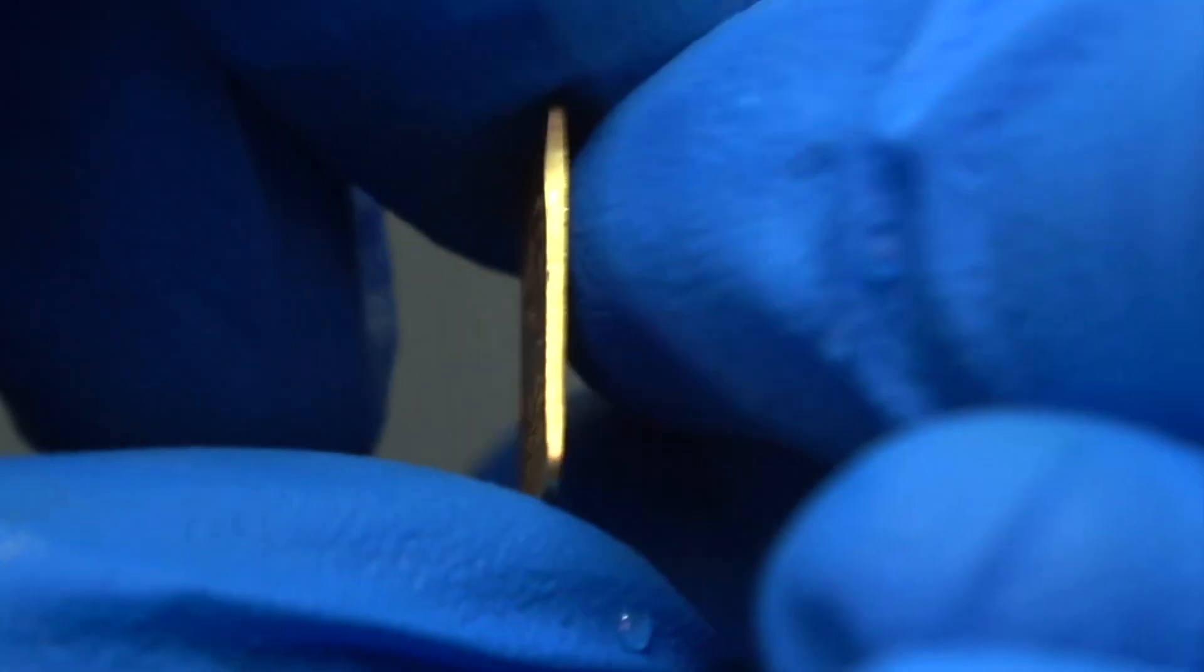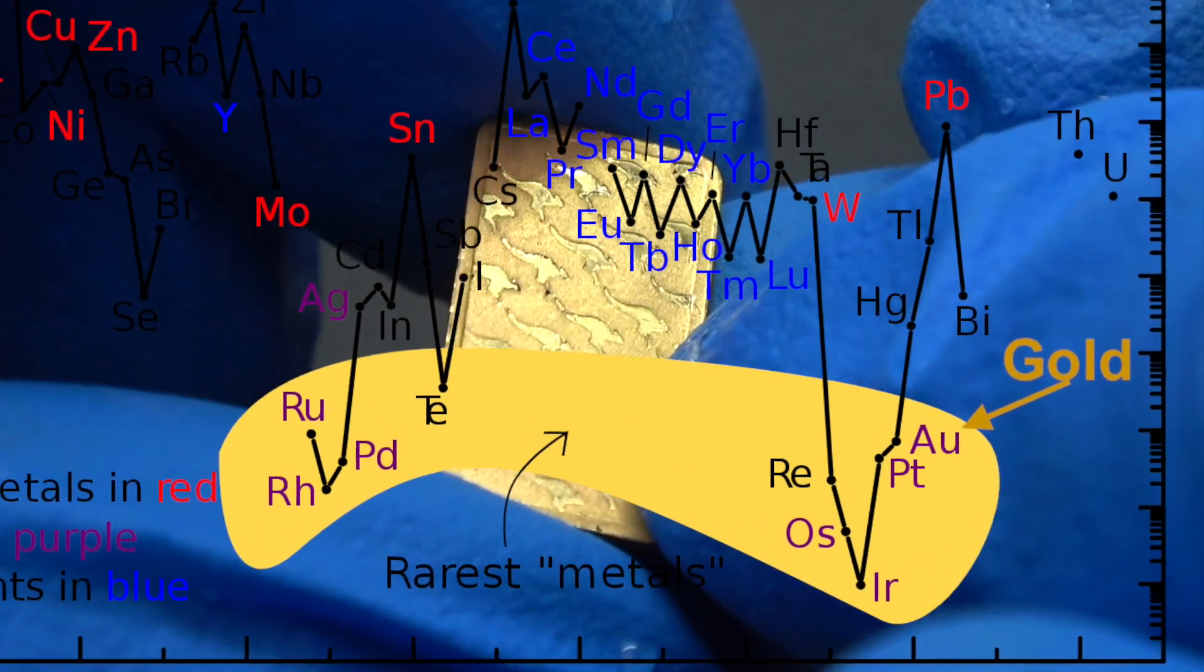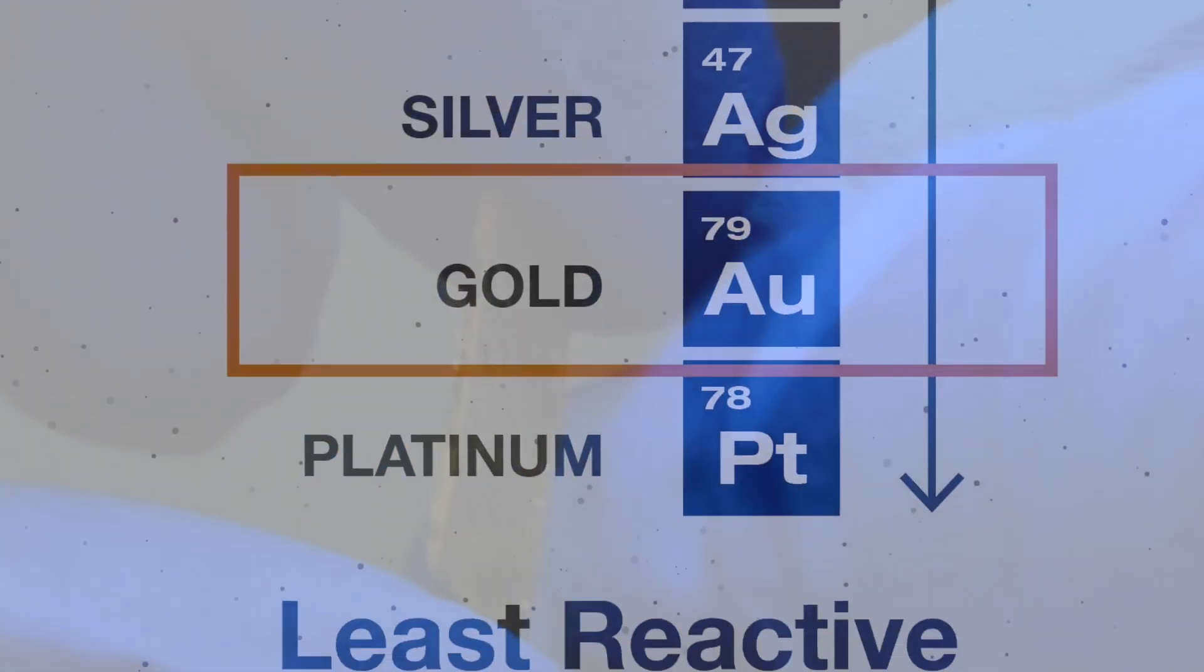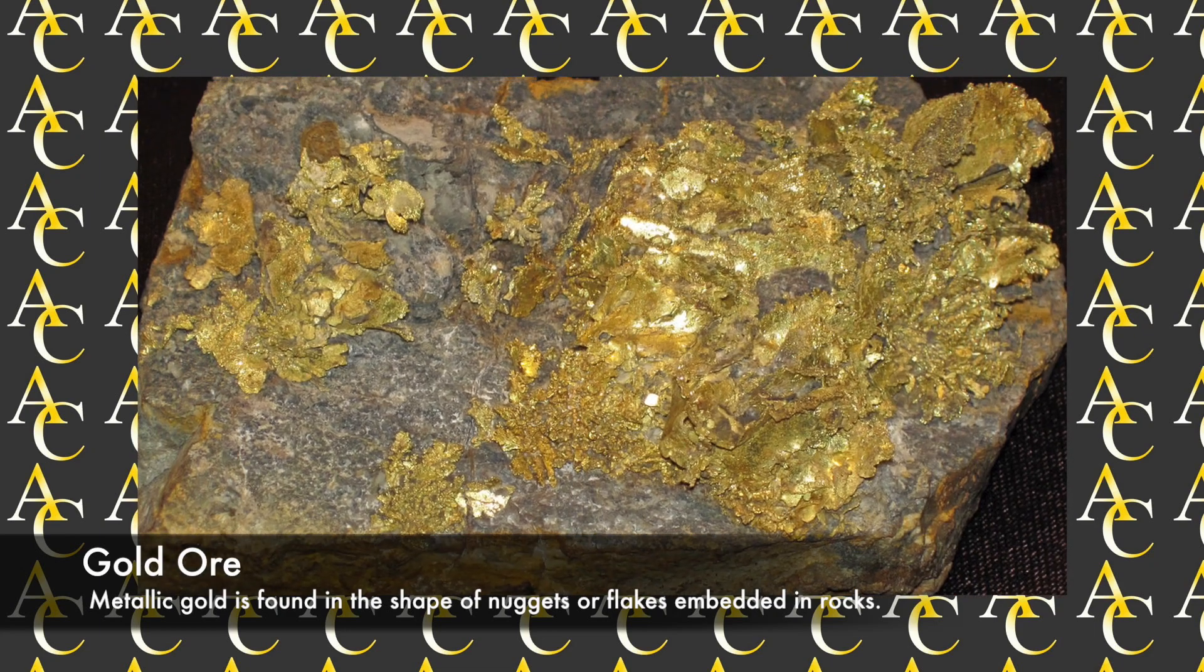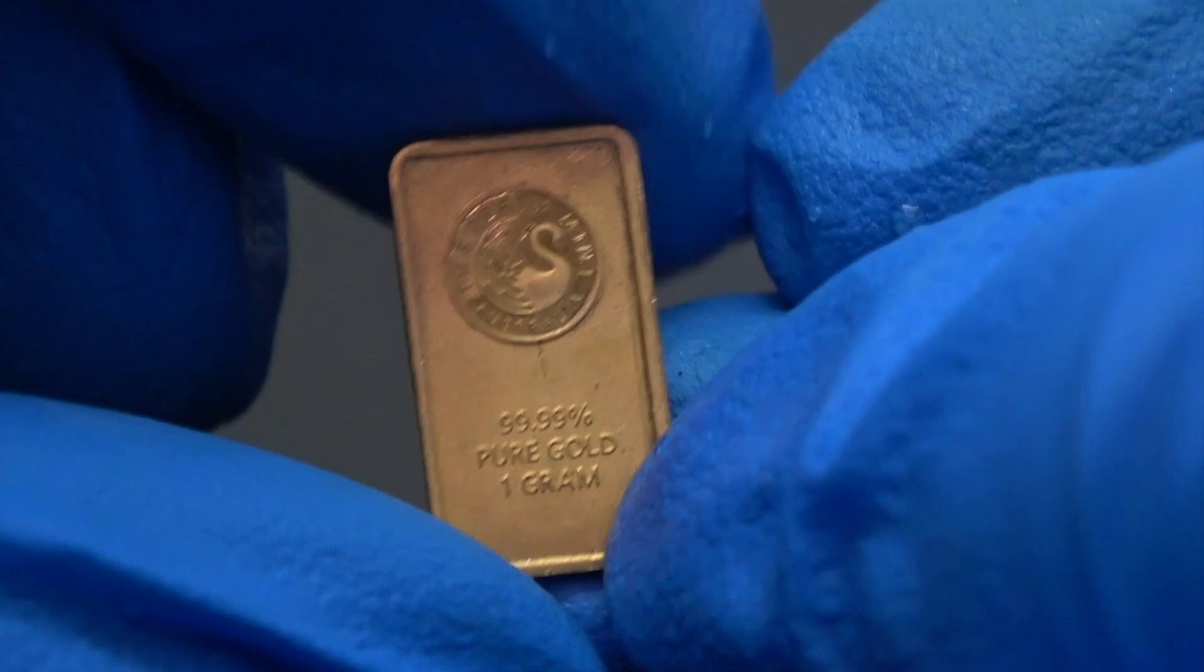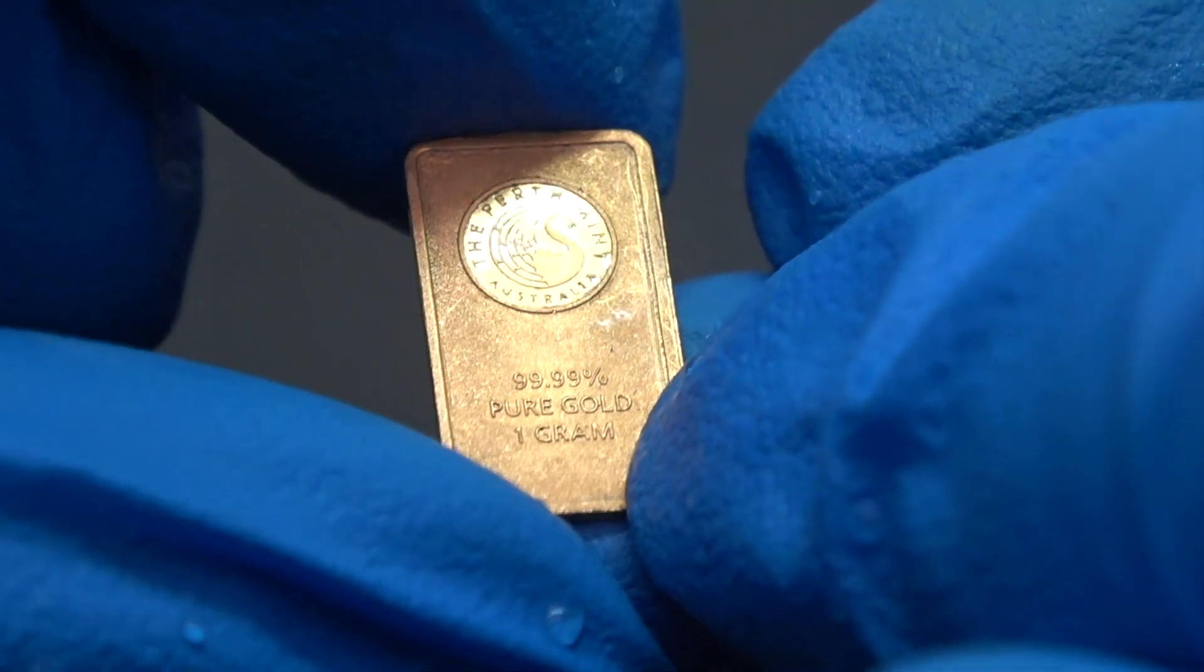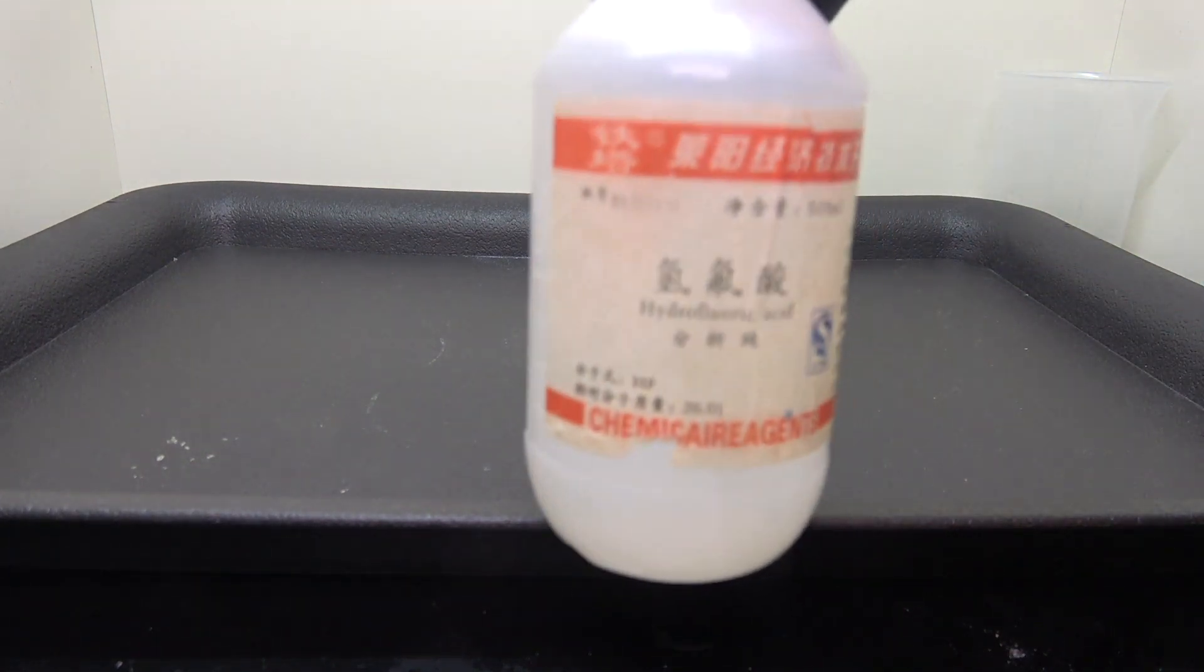Gold has been considered a precious metal since the dawn of human civilization, not only because of its rareness but also its immunity to almost all chemical attacks. It's one of the very few metals that remained in its elemental form since the formation of this planet, and it will stay the same way long after humanity falls. But will it survive 40% hydrofluoric acid, the only mineral acid that can dissolve glass?